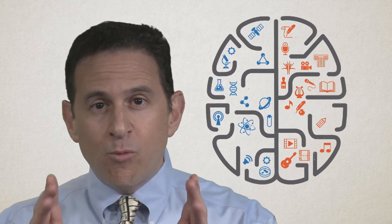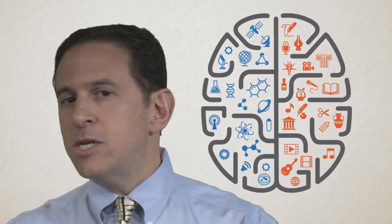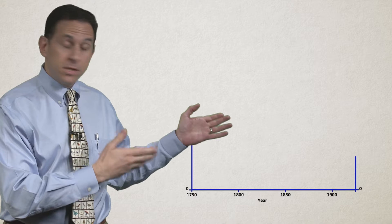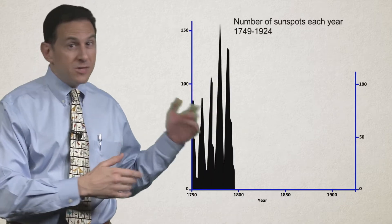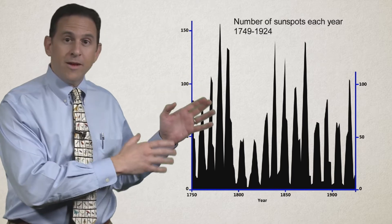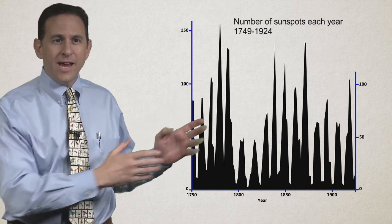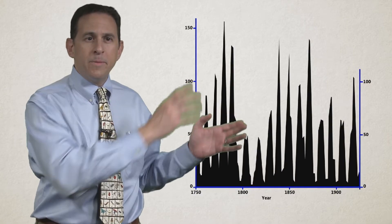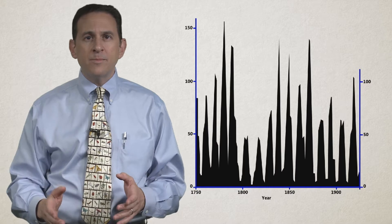Let's have an example of one particular kind of decoding. This is sunspot data from 1749 to 1924, a very famous data set. You're just counting the spots that appear on the sun on a yearly basis, and the number of spots is associated with solar activity. This regular pattern, up and down, up and down — this 11-year cycle is very well known. It tells us something about the nature of the sun.